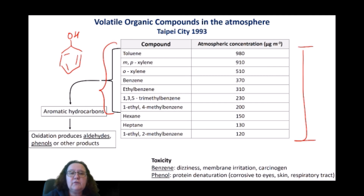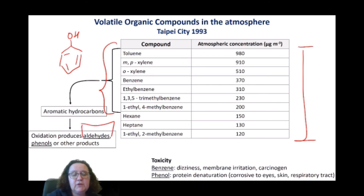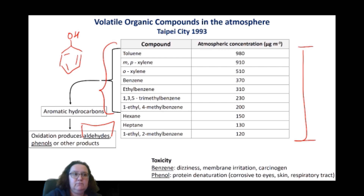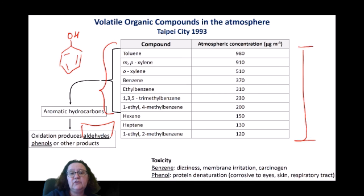Besides that, these volatile organic compounds, many of them derived from benzene, can oxidise in the atmosphere to produce additional compounds — mostly aldehydes, some ketones, and phenol. Those compounds themselves are also potential carcinogens and highly oxidising species. So it is not only the compounds released from the combustion of petrol that are problematic; once they enter the atmosphere, they react to form other compounds that are as problematic as, if not more so than, the original chemicals released from the incomplete combustion of petrol.